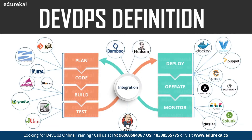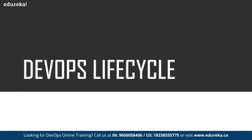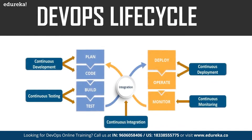As you can see in this diagram, these are the various tools used in DevOps. Now let us have a look at the DevOps lifecycle. As you can see in this diagram, these are the various phases of the DevOps lifecycle: continuous development, continuous testing, continuous integration, continuous deployment, and continuous monitoring. Let us have a look at each of these phases one by one.